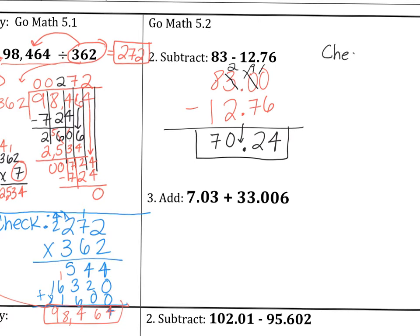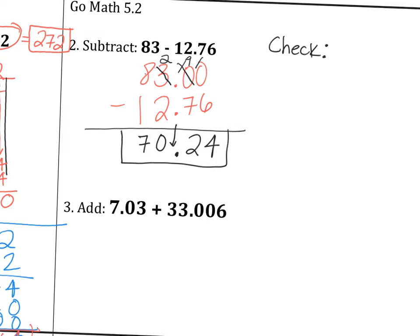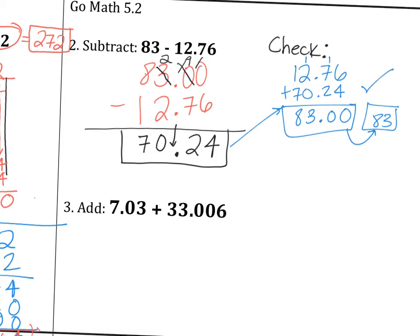So a way you can check this, is if you take the second term, the thing that you subtracted and add it to the thing that you found, it should add up to 83. So let's say you have 12.76 plus your answer. If you get 83 as your answer, you did the right thing. What's 6 plus 4? 10. 7 plus 1 is 8, plus 2 is 10. 2 plus 1 is 3, and then 1 plus 7 is 8. 83 dollars is the same thing as writing it like that. So you got the right answer. And the answer is 70.24.